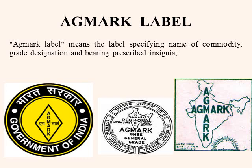Labels of different colors are used to indicate the grade of the product — based upon the grade of the product, the color of the label may also change. The AGMARK labels are printed on special quality paper and issued by the Agriculture Marketing Advisor.